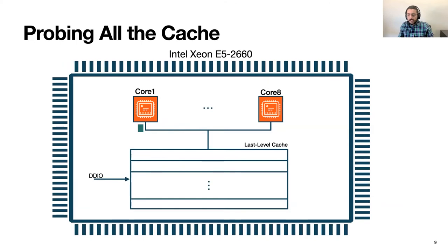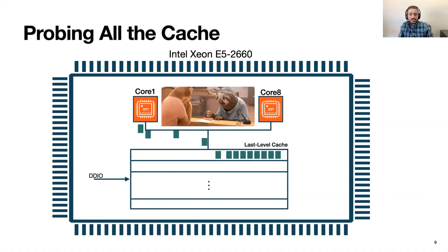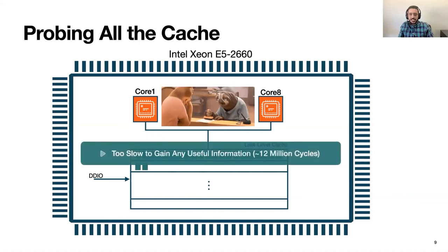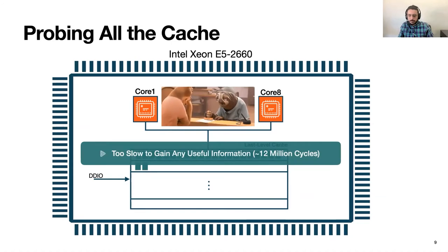We want to detect incoming packets from their cache footprint, but if we naively probe the entire last-level cache, we cannot gain any useful information — it takes around 12 million cycles to probe the whole cache. However, if we know more about the packets and where they are in memory, we can significantly reduce the probing necessary. Our careful examination of the driver code gives us some important information we can exploit.